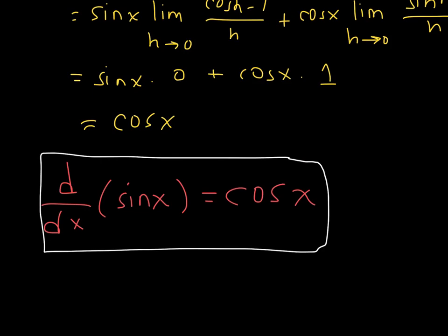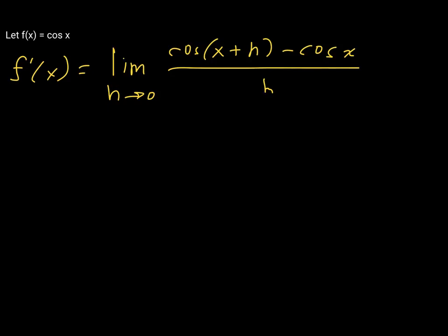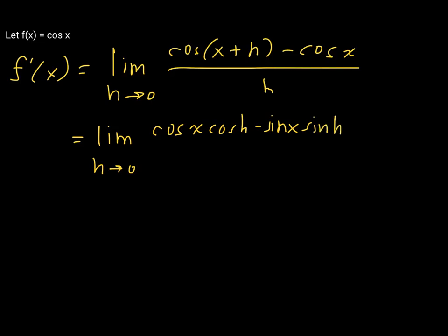Now let's find the derivative of cosine of x using a similar method. With f of x equal to cosine of x, f prime of x equals the limit as h approaches zero of cosine of x plus h minus cosine of x, all over h. We expand this using the sum identity for cosine, giving the limit as h approaches zero of cosine of x times cosine of h minus sine of x times sine of h minus cosine of x.